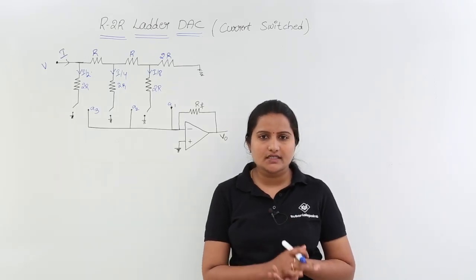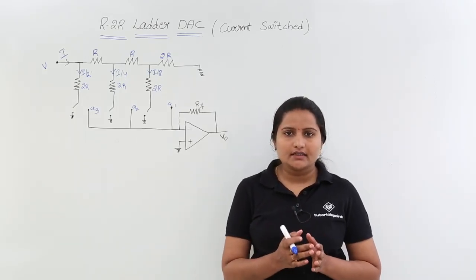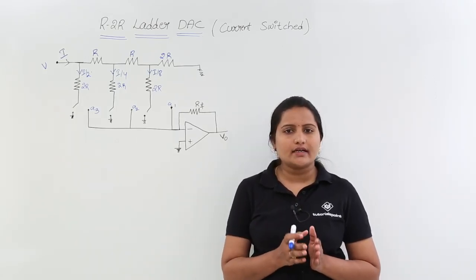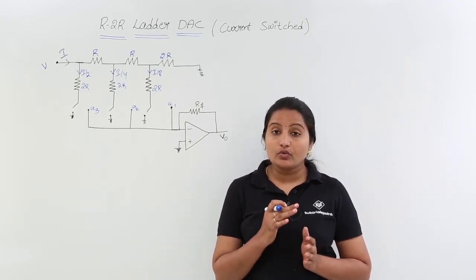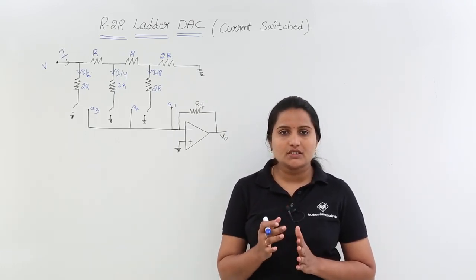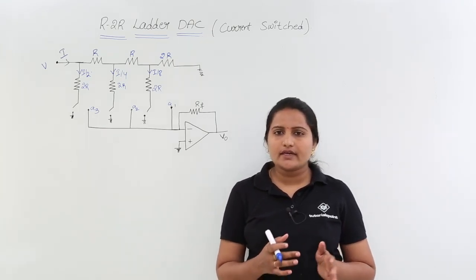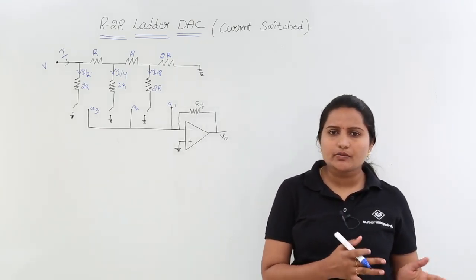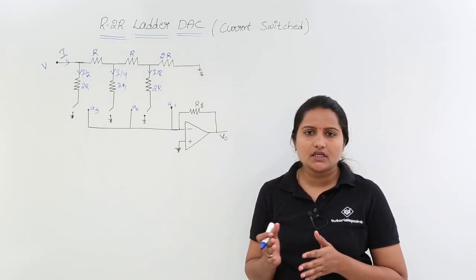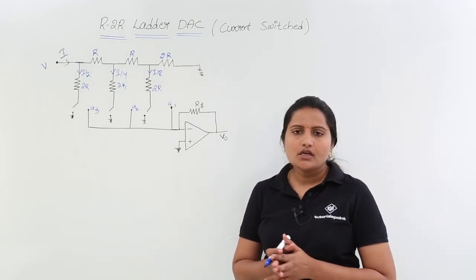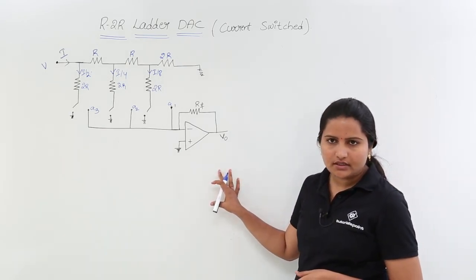In this class we are going to discuss the R-2R ladder DAC that is also current-switched. In the previous class we discussed the voltage-switched R-2R ladder DAC, in which we get some current spikes when switching the input. To reduce that problem we are going to use this circuit.